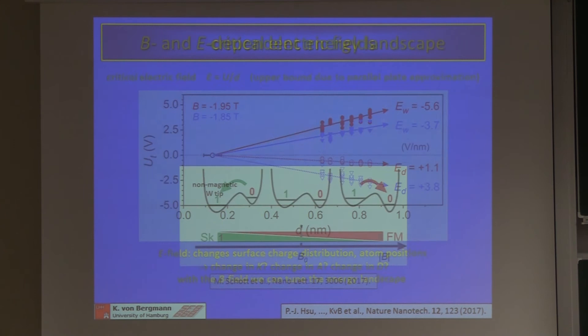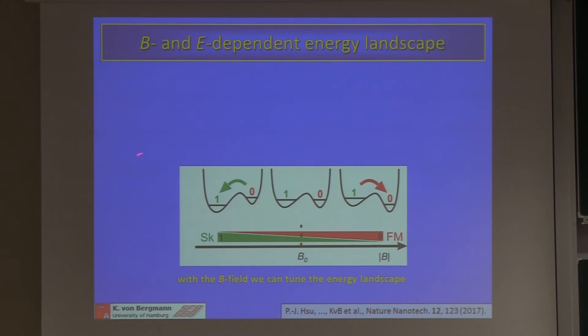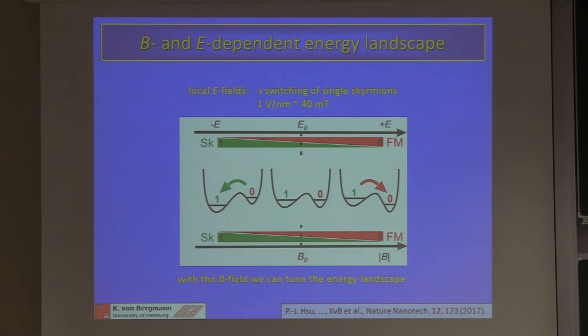To summarize the electric field switching: with an external magnetic field we can tune the energy landscape between the skyrmion state and the ferromagnetic state. The electric field from the STM tip achieves the same local tuning, where 1 volt per nanometer corresponds to approximately 40 millitesla when converted to an equivalent magnetic field.